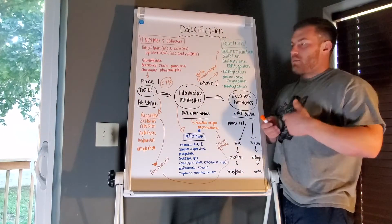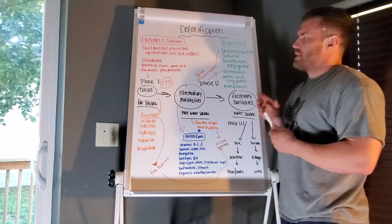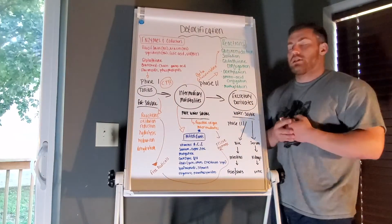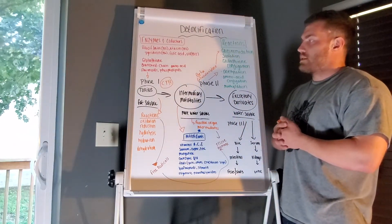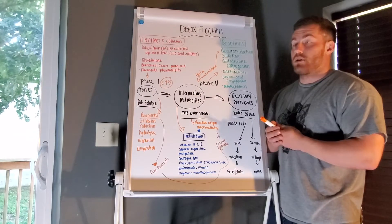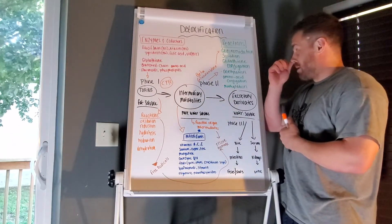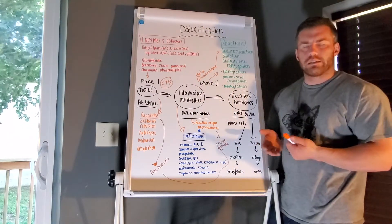So they're not being broken down, they're not being excreted. Nasty stuff. A lot of the research actually correlates high beta-glucuronidase with certain cancers. You can imagine it's probably correlated with breast cancer.